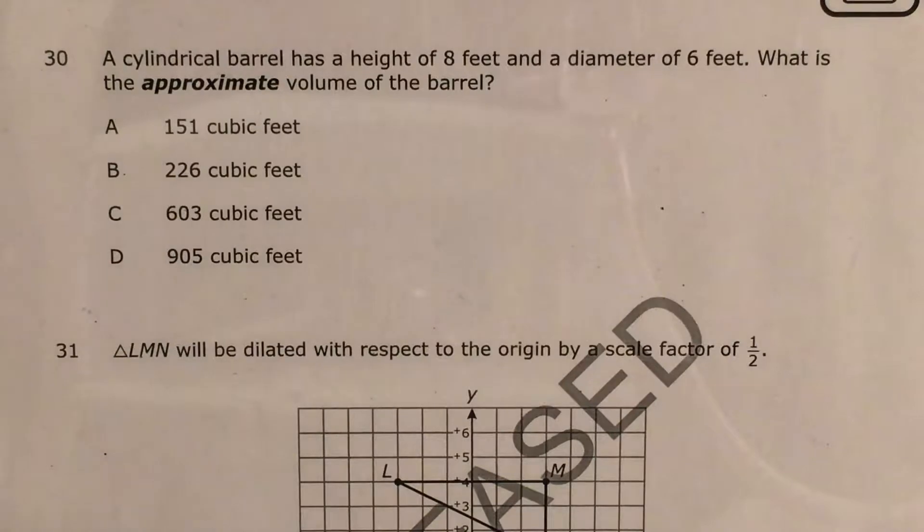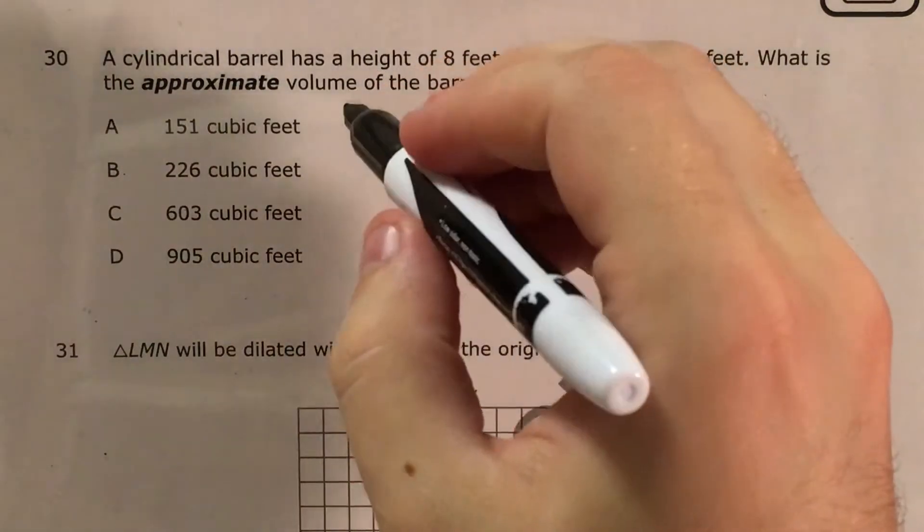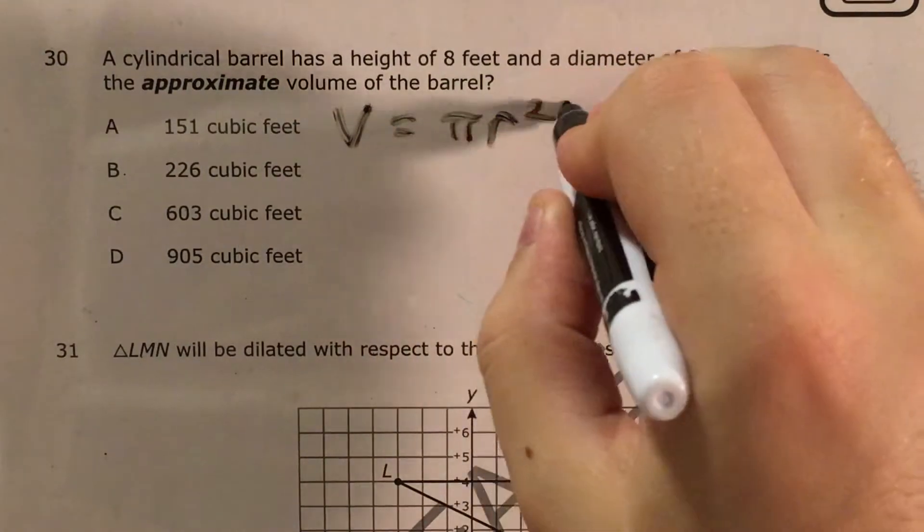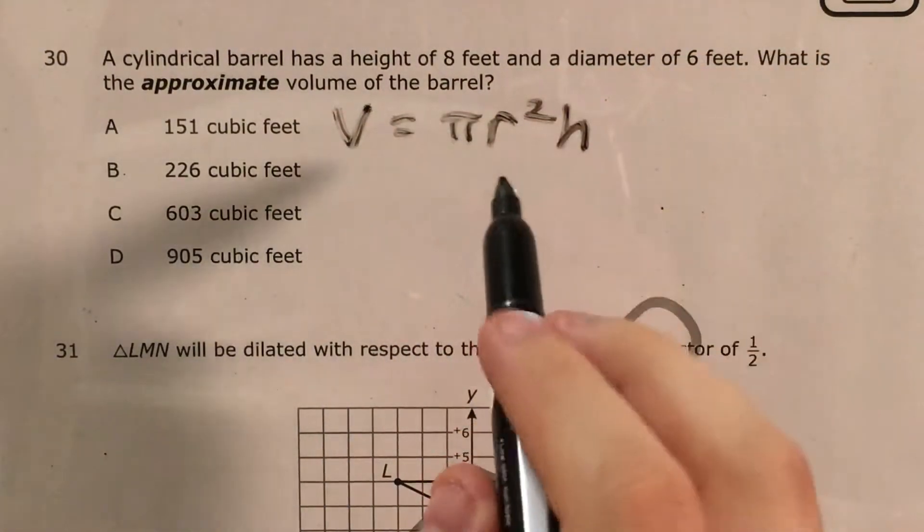There was another question exactly like this. It even has the same kind of trick answer, so I'm gonna do this question the exact same way I did that one and start with the actual formula for volume of a cylinder, which is pi r squared times height.